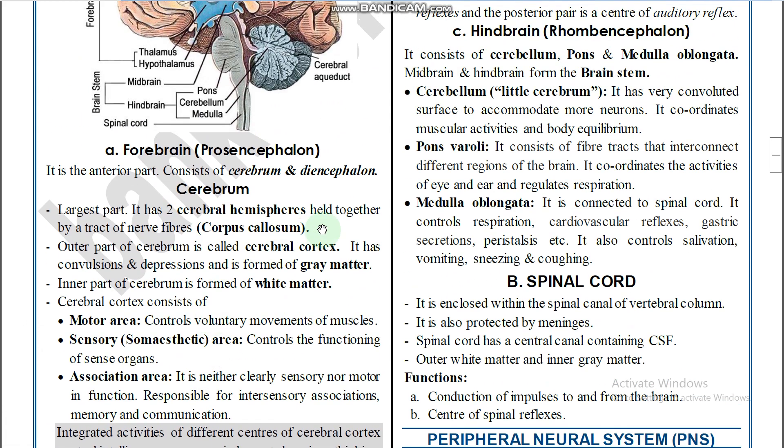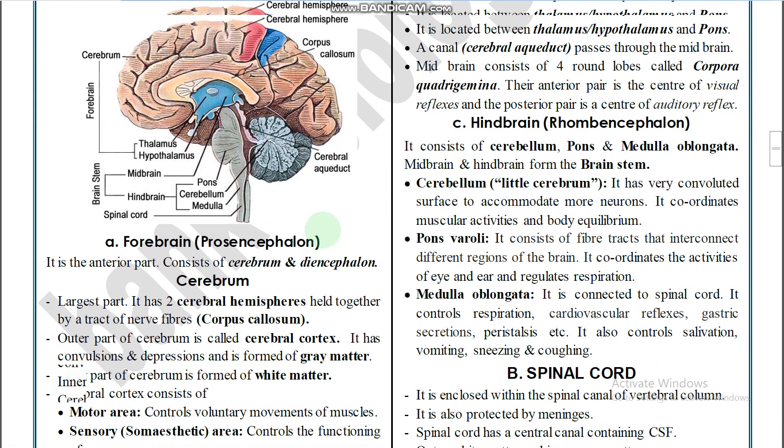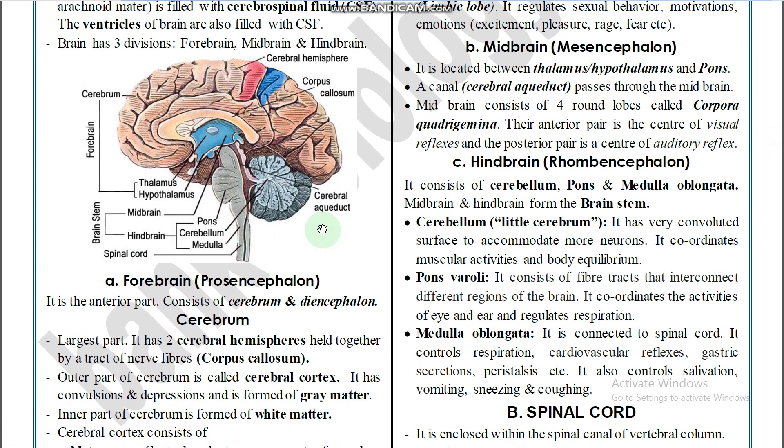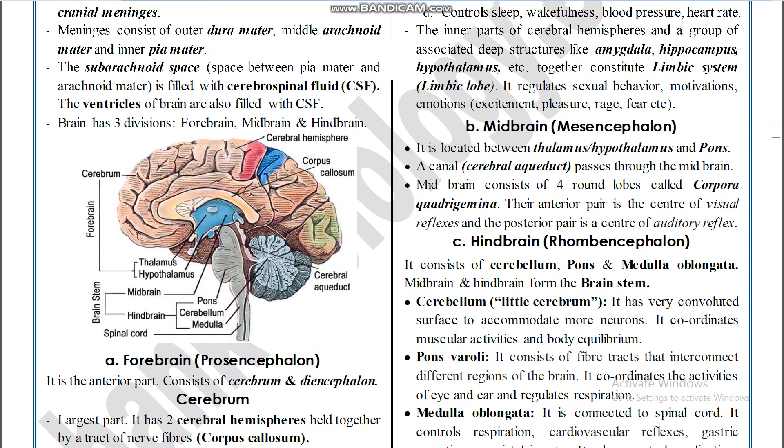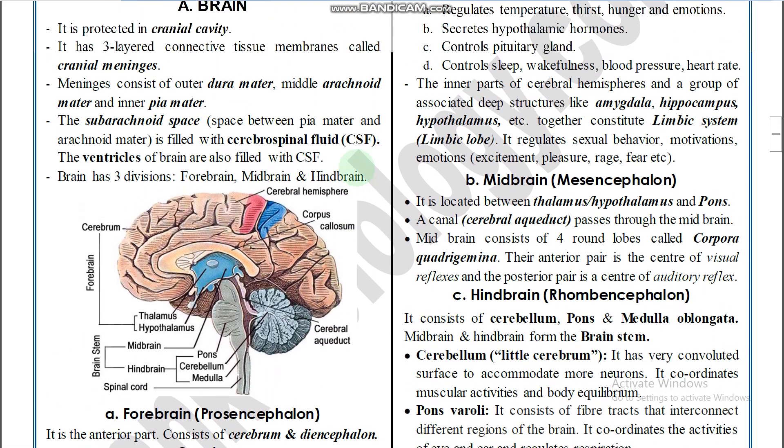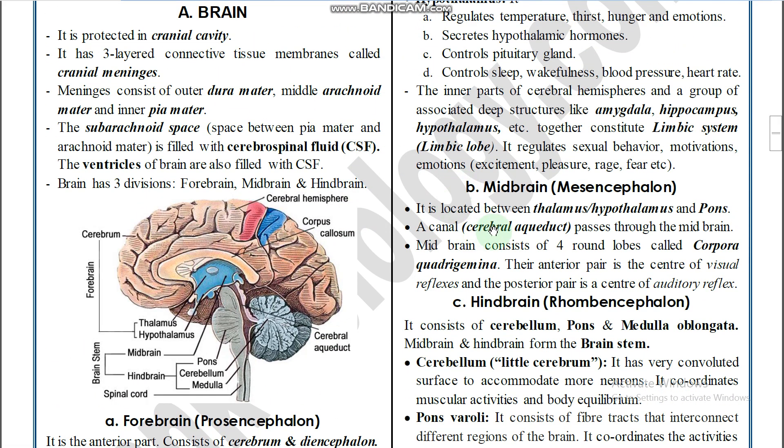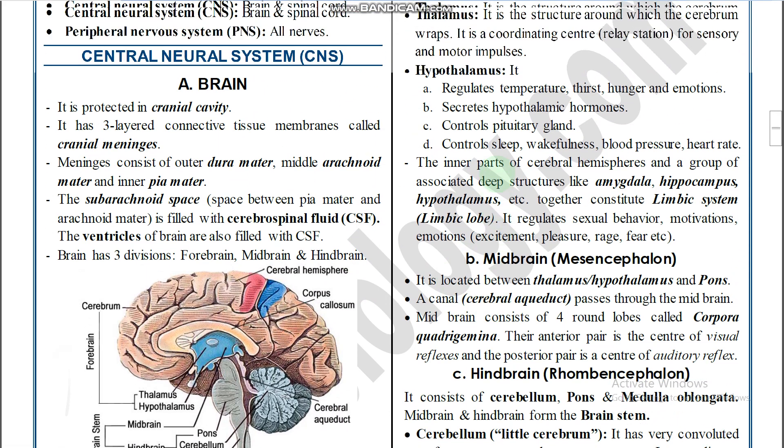The integrated activities of different centers of the cerebral cortex control intelligence, memory, judgment, learning, speaking, and articulate speech — all under the control of the cerebral cortex.